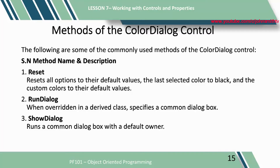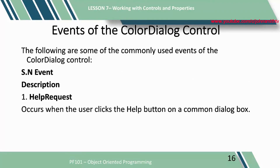Methods of the color dialog control: 1. Reset — resets all options to their default values, the last selected color to black, and the custom colors to their default values. 2. Run dialog — when overridden in a derived class, specifies a common dialog box. 3. Show dialog — runs a common dialog box with a default owner. Events of the color dialog control: 1. Help request — occurs when the user clicks the help button on a common dialog box.